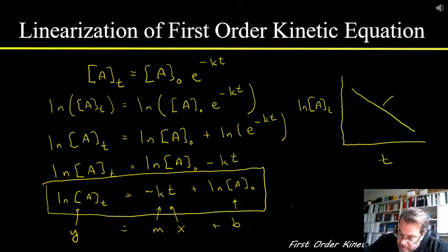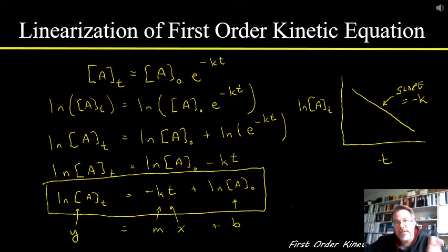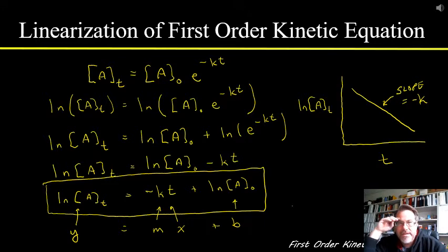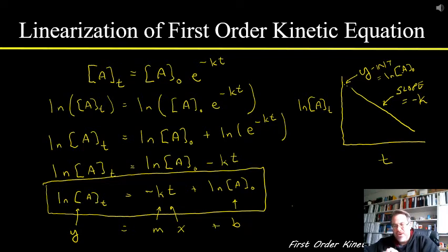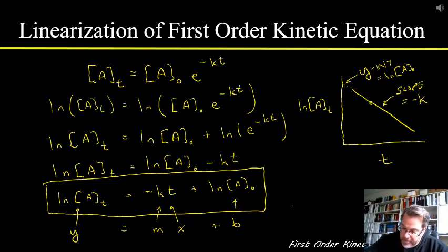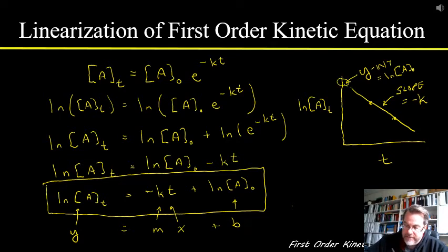The slope of that line is negative k, where k is the rate constant. Rate constants are always positive, so the slope will be negative. When you work through these, make sure you remember that slope equals negative k. If you take this line and extrapolate back, the y-intercept is the natural log of the initial concentration. Usually we don't need to calculate that because the initial concentration is given, but if you only had a couple of points in the middle of the reaction, you could use this straight line to extrapolate back and find the initial concentration.